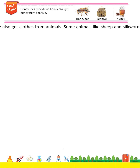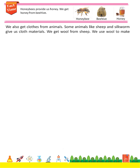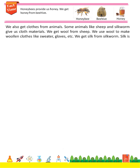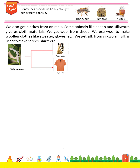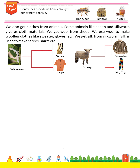We also get clothes from animals. Some animals like sheep and silkworm give us cloth materials. We get wool from sheep. We use wool to make woolen clothes like sweaters, gloves, etc. We get silk from silkworm. Silk is used to make sarees, shirts, etc.